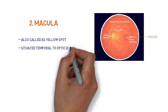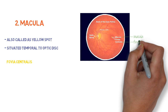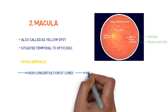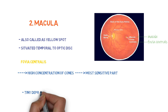The name 'centralis' suggests that it is the central and depressed part of the macula. It is the most sensitive part of the retina because it contains higher concentrations of cone cells and gives the best vision. The tiny depression at the center of the fovea is called the foveola.